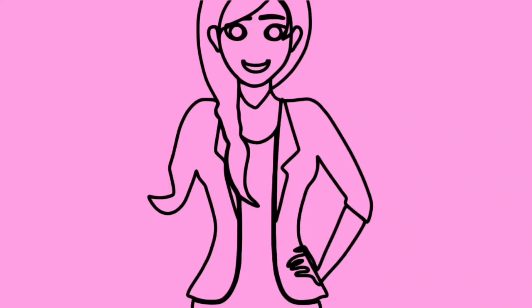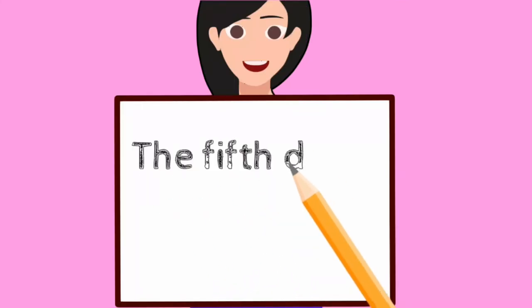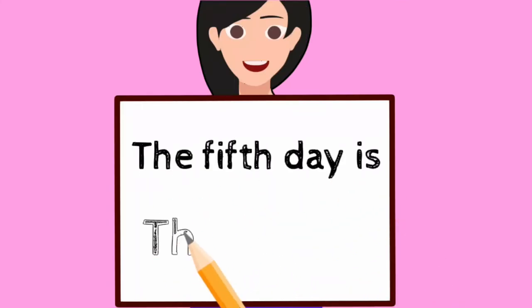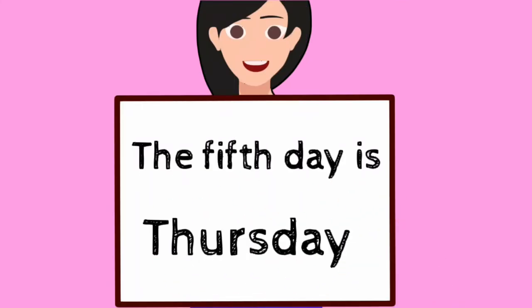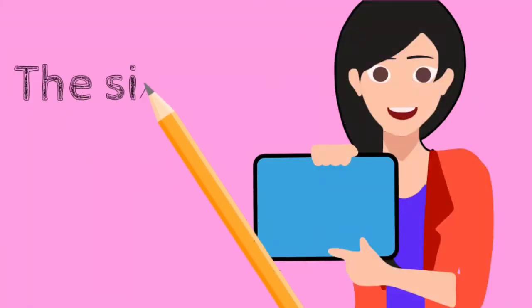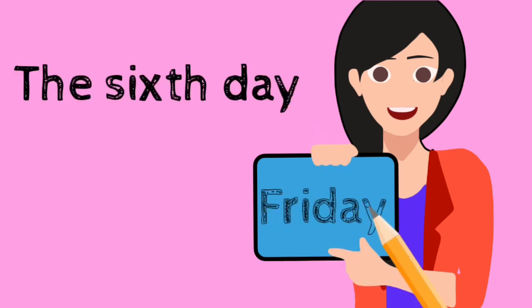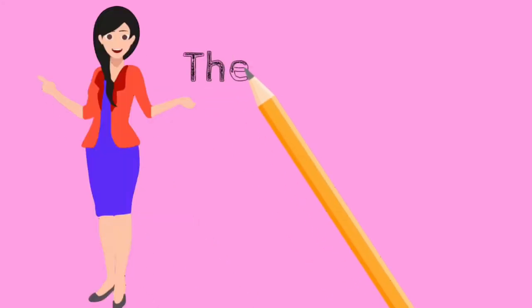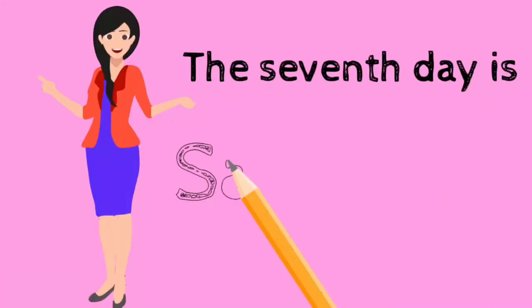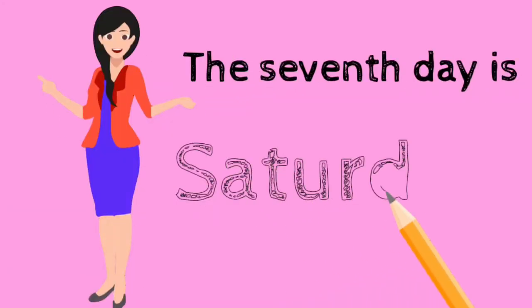From Wednesday, we go to the fifth day of the week, which is Thursday. From Thursday, we go to the sixth day of the week, which is Friday. From Friday, we go to the last day of the week, which is the seventh day — Saturday.